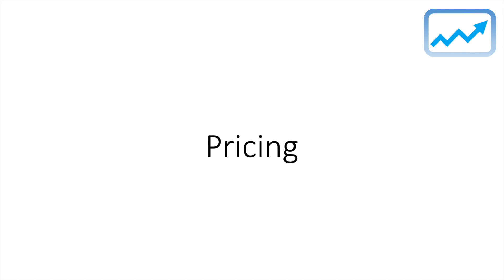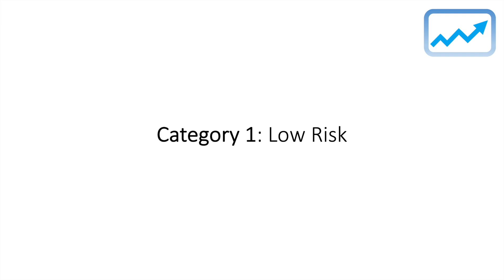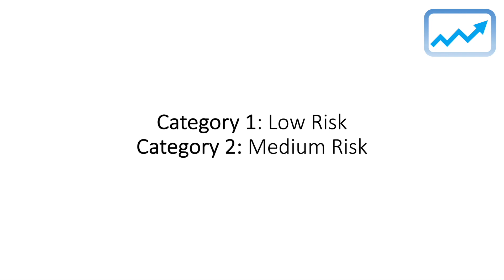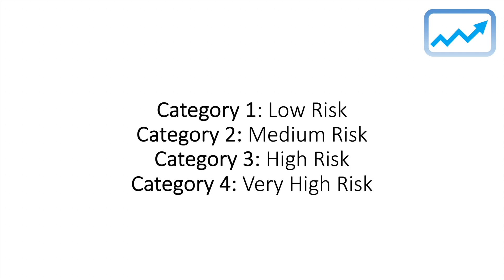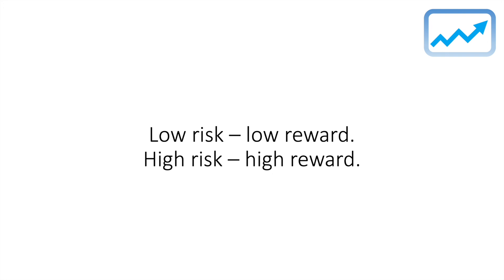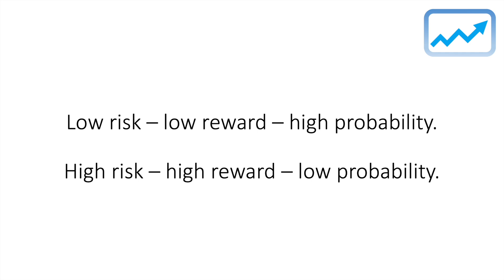For this strategy I classify players into different risk categories, which enables us to evaluate the level of risk and calculate the stake for each player we are backing. There are four categories: category one — low risk; category two — medium risk; category three — high risk; category four — very high risk. The level of risk is directly proportionate to the opposing level of reward. Low risk gives low reward with higher probability; higher risk gives higher reward with lower probability.